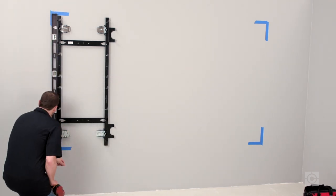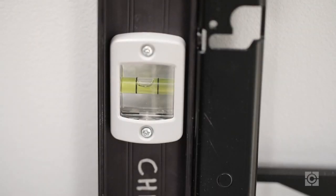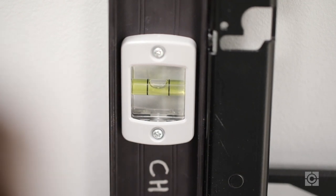Now, check the mount to ensure it is level vertically. If an adjustment is needed, loosen the lower legs and re-tighten in the level position.